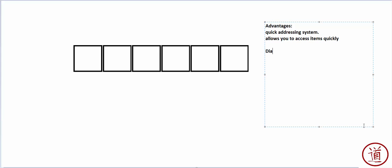However, there are some disadvantages with arrays. One of them is that it has a set size. Another one is that it can only contain one type of data.